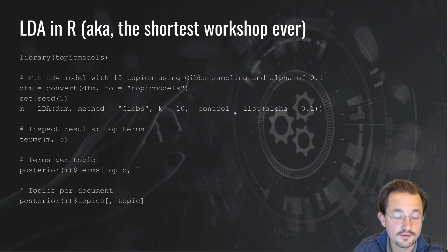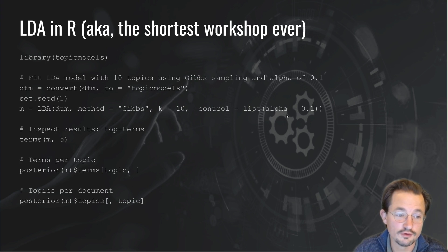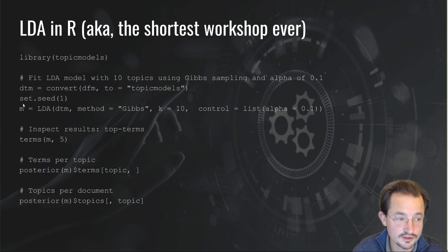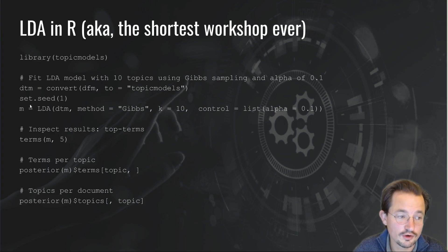As explained earlier, it's a good idea to take a lower alpha than the default value in the algorithm. Finally, you see that we set the seed. This sets the random seed, which means that if you run the same code a number of times, you will get the same results.